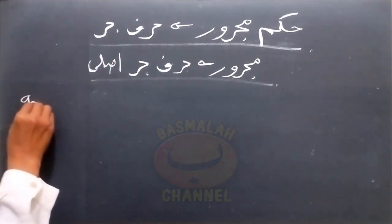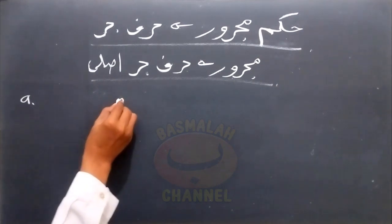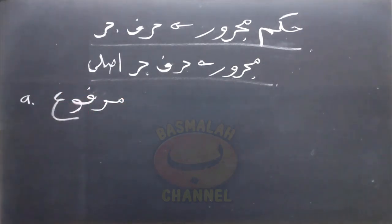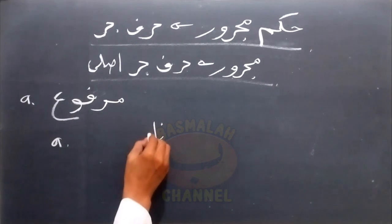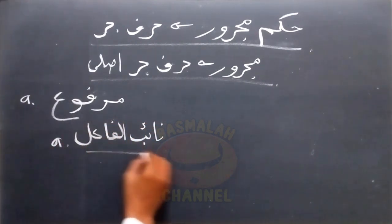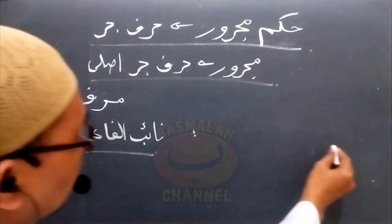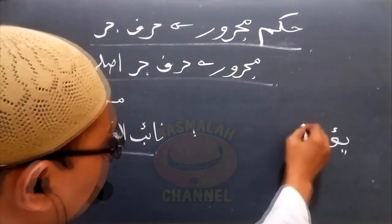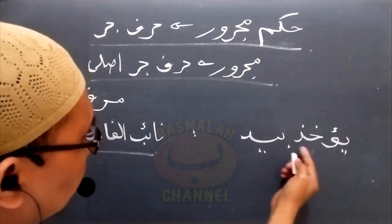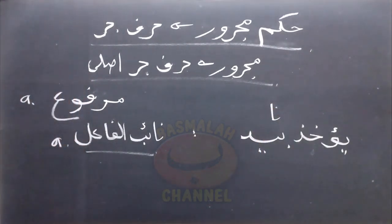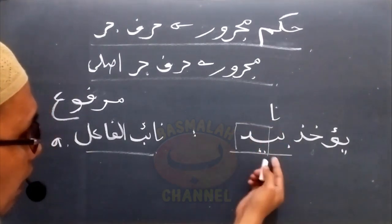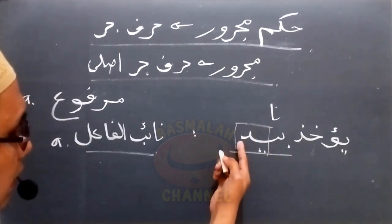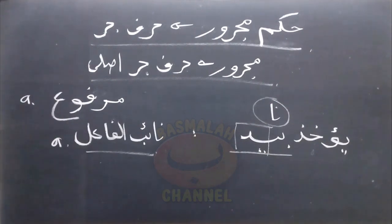Yang pertama, hukum Majrurnya di sini dalam mahal rafa'. Hal ini terdapat dalam beberapa keadaan. Yang pertama, hukum Majrurnya tersebut di rafa'kan sebagai Naibul Fa'el. Contohnya seperti lafad 'yukhadzu biadin' — diambil dengan tangan. Di sini terdapat susunan Jer Majrur, dimana huruf Jernya menggunakan huruf Jer Ba', dan Majrurnya adalah lafad 'yadin'. Susunan Jer Majrur di sini dalam mahal rafa' sebagai Naibul Fa'el.